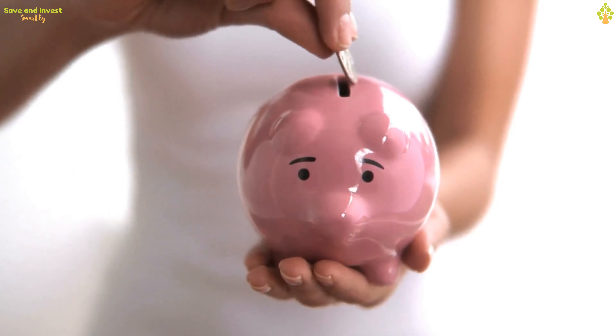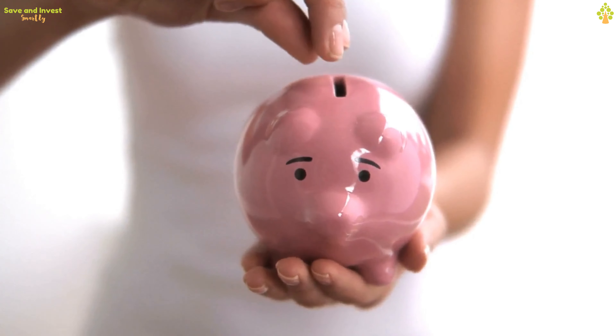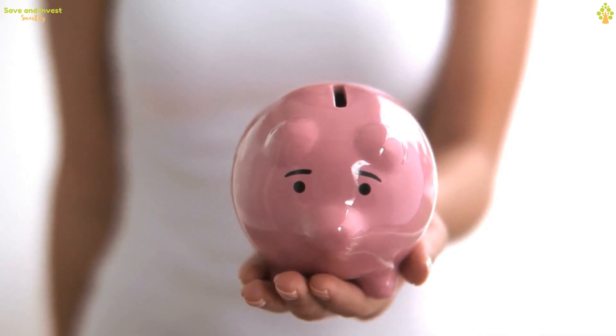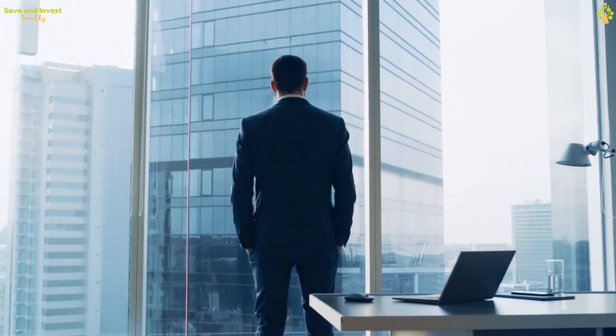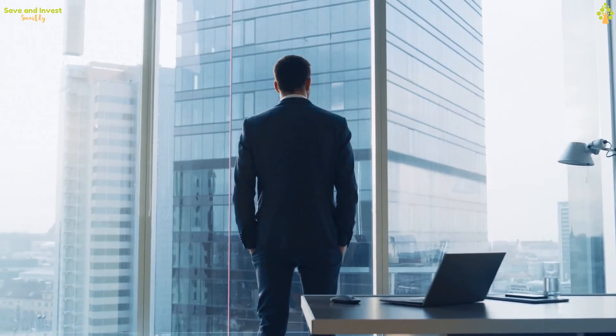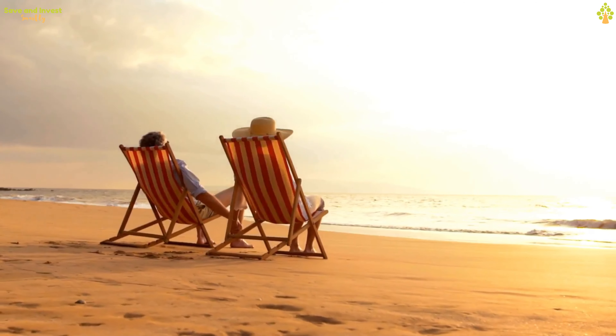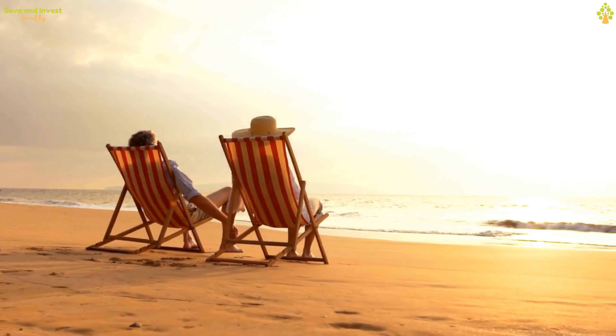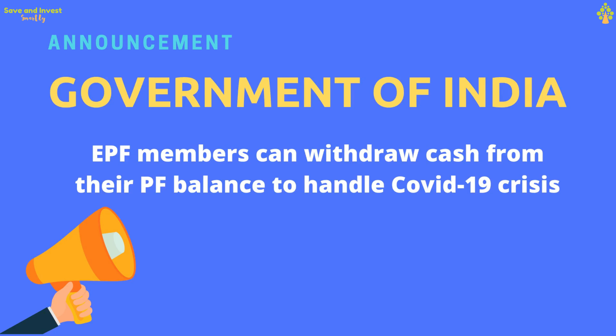There is a popular saying, save for your rainy days. Provident fund is such a saving that you make during your earning period. This is in fact the major portion of retirement savings for many. The Indian government has announced that people can withdraw cash from their Employee Provident Fund if they are facing financial problems due to the coronavirus-related lockdown.